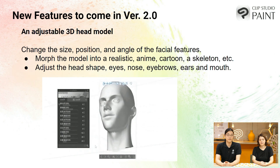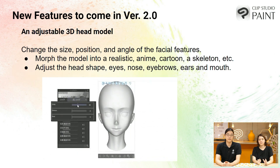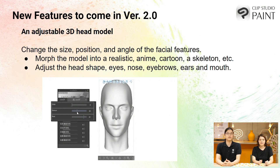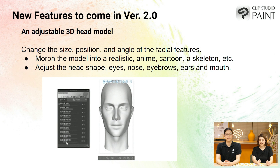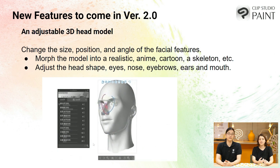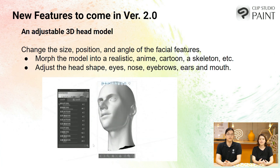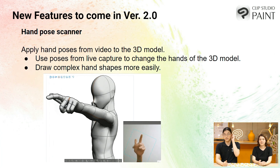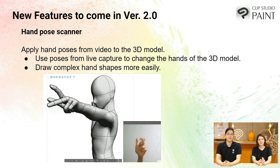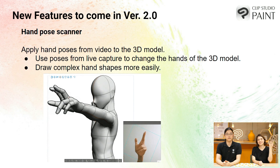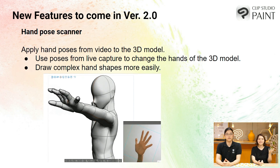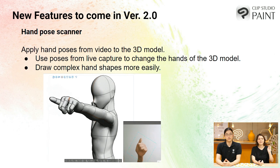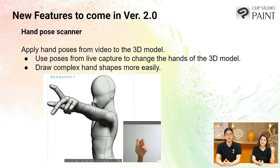Here you can see the different sliders for all the little adjustments you can do for head shape, eyes, nose, eyebrows, ears, and mouth. So if you have a character that you're drawing over and over again, you can save the proportions for that character and use it as a reference for later. Drawing hands can be a challenge, but with this hand pose scanner you can use live capture video footage to change the model in real time and then use that to do your drawing.